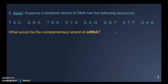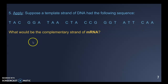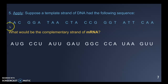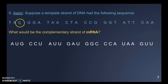Now imagine a strand of DNA opened up — what would the complementary mRNA strand be? You have to think about which bases pair with T, A, C, and G. T always pairs with A; A usually pairs with T in DNA, but since we're building RNA, T is replaced with U; C always pairs with G and G always pairs with C. Following those base pairs all the way along, you get the complete mRNA code.